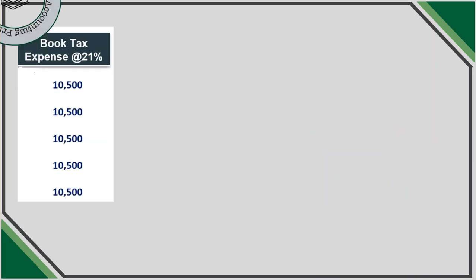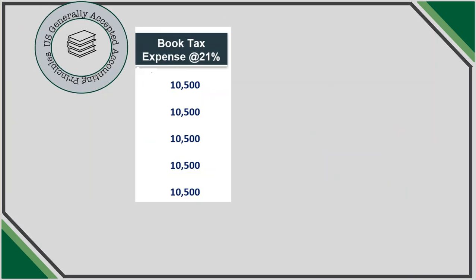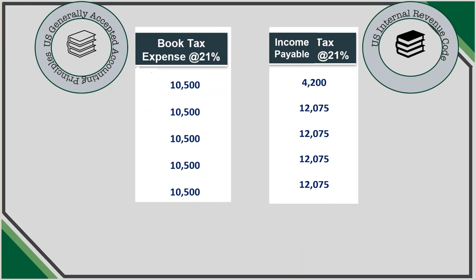Let's compare the tax amount computed under each set of rules year by year. If income over time is the same, we should expect the same outcome with respect to total taxes. Comparing the total five-year taxes, we get $52,500 in both instances. Since the total due over time will be the same, US GAAP designed rules to account for income taxes in a way that ensures differences that are only temporary in nature do not result in wild swings to the effective tax rate of the company.